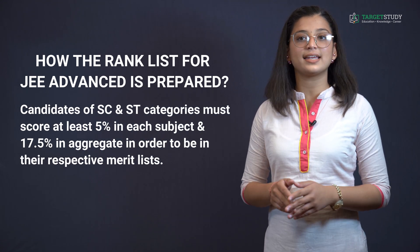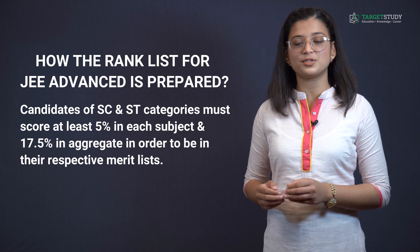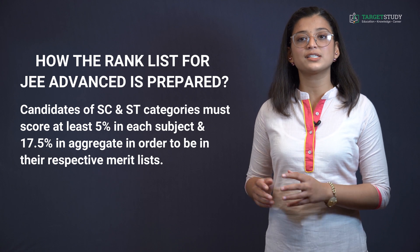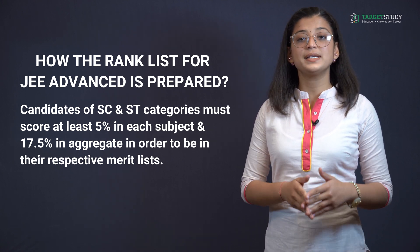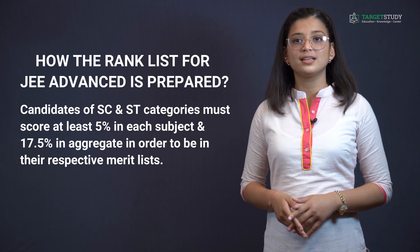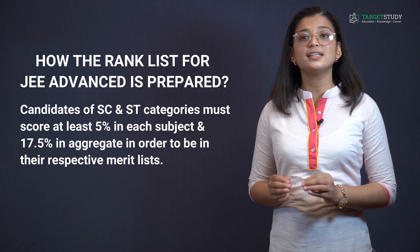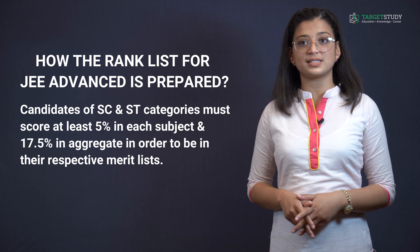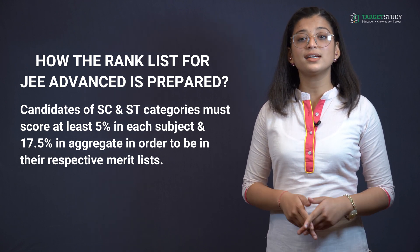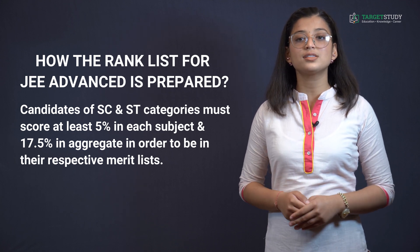Candidates of SC and ST categories must score at least 5% in each subject and 17.5% in aggregate in order to be in their respective merit list. A separate PD merit list will be prepared corresponding to GE, OBC, SC, and ST categories. To be in these respective merit lists, a candidate must score at least 5% in each subject and 17.5% in aggregate.